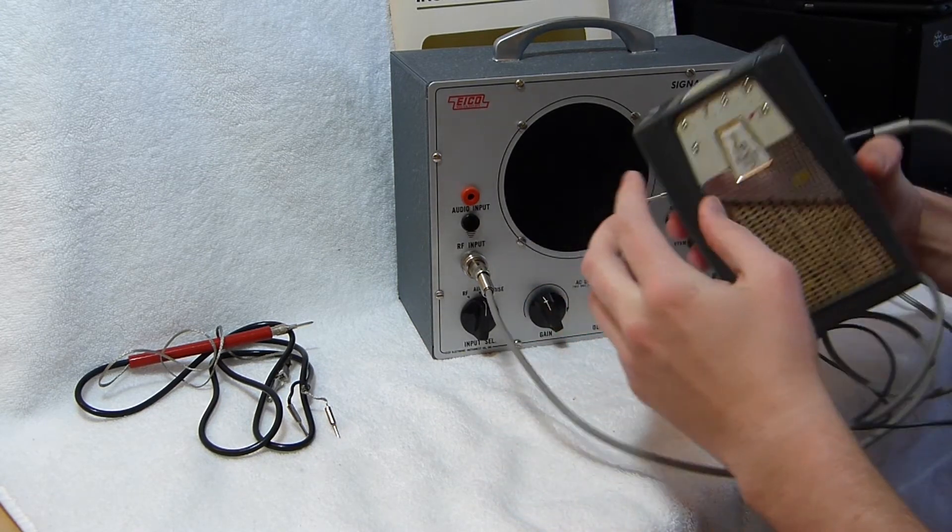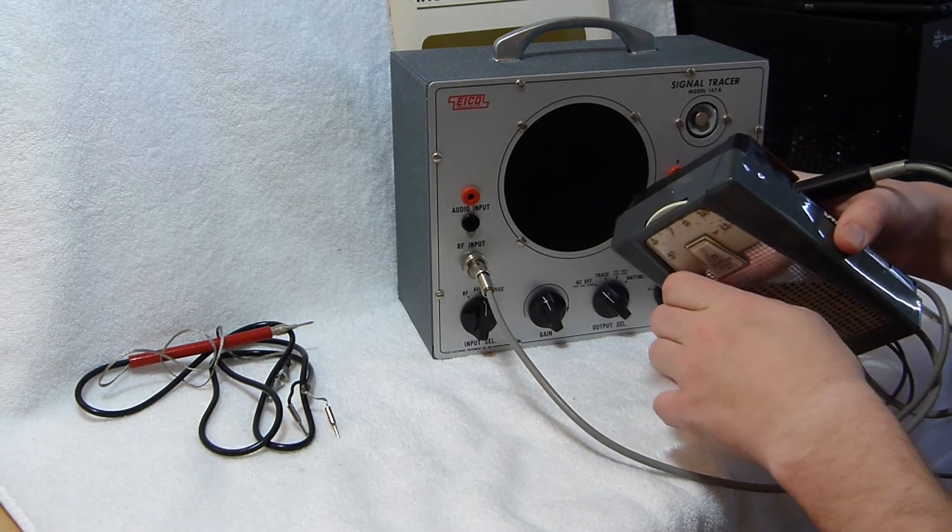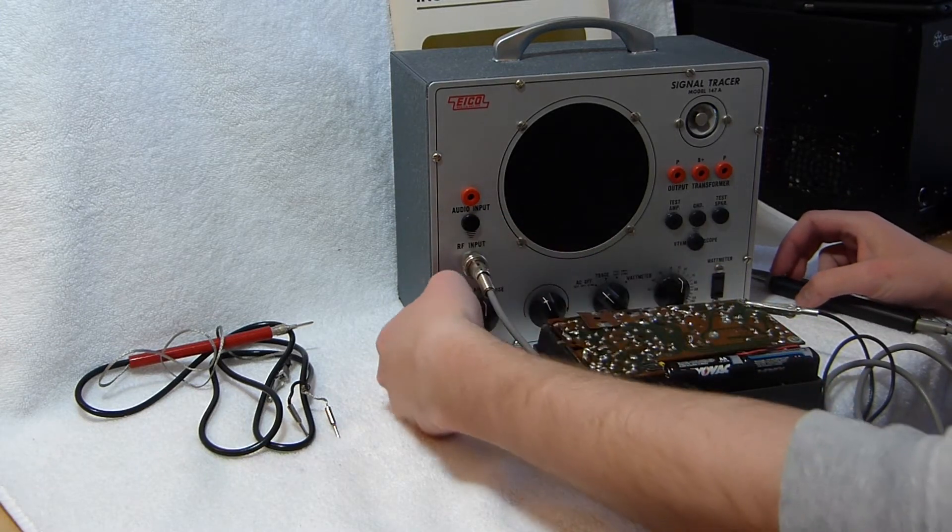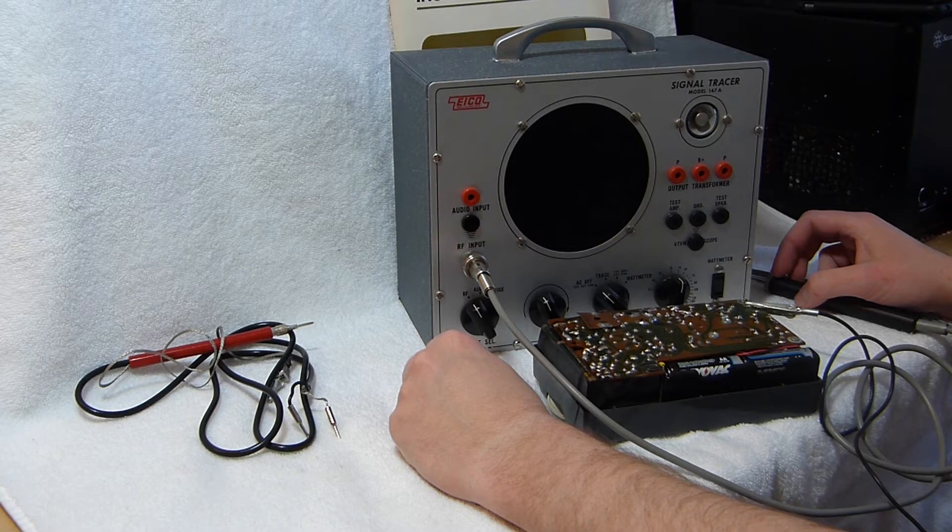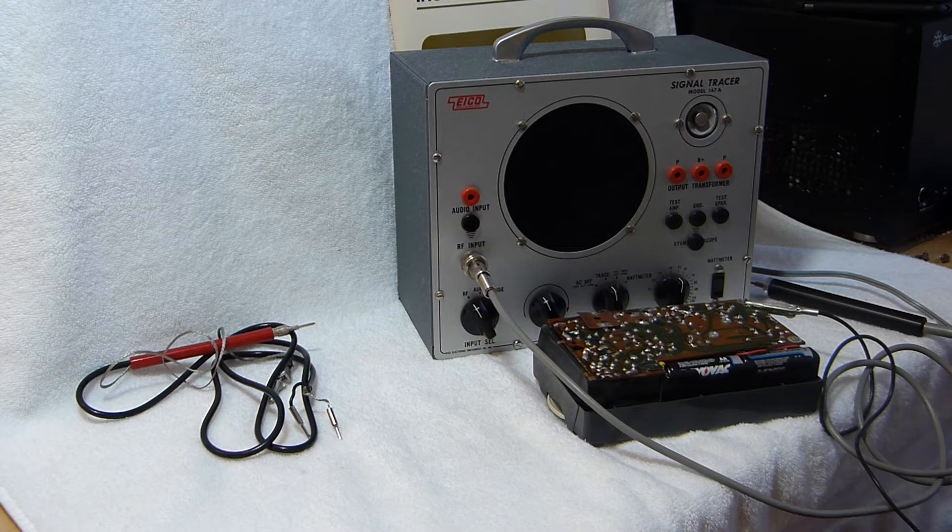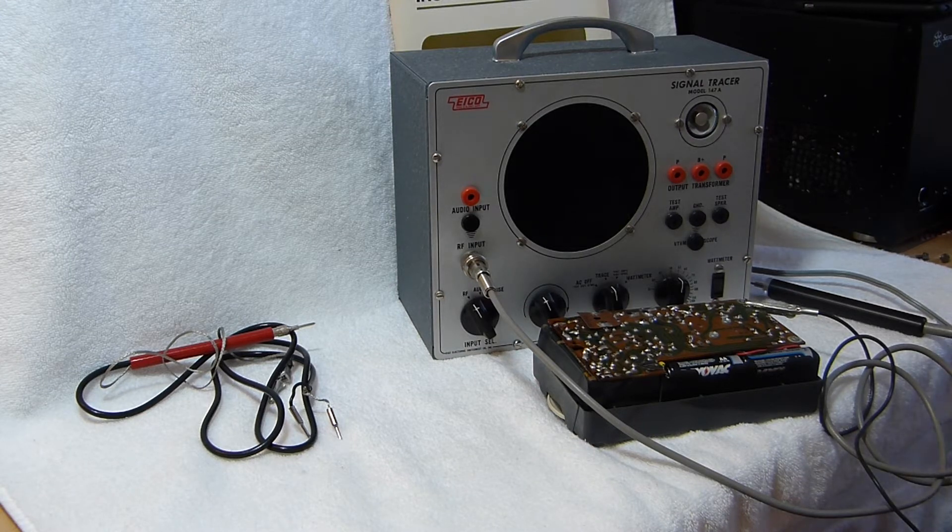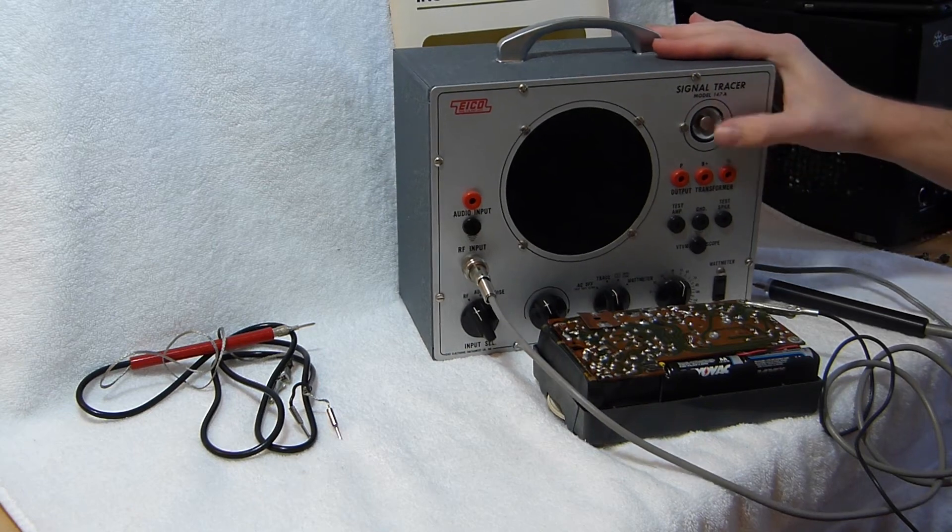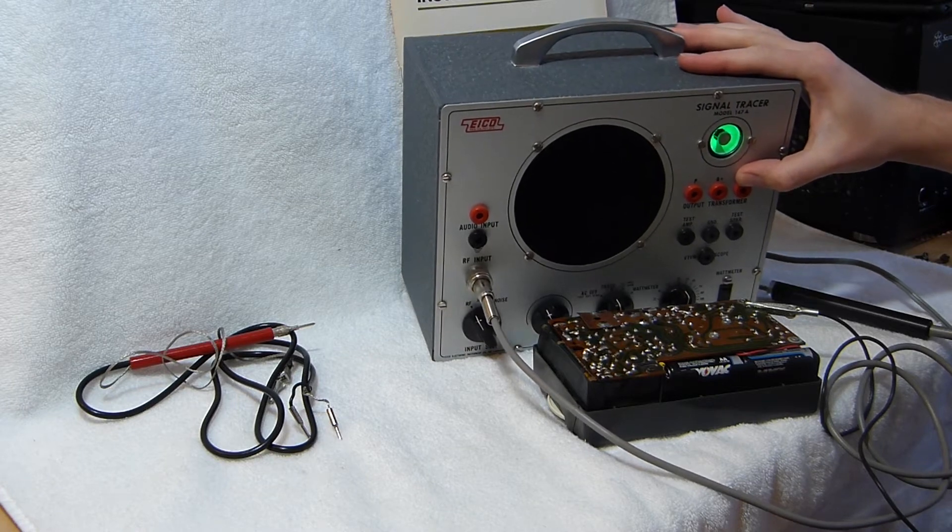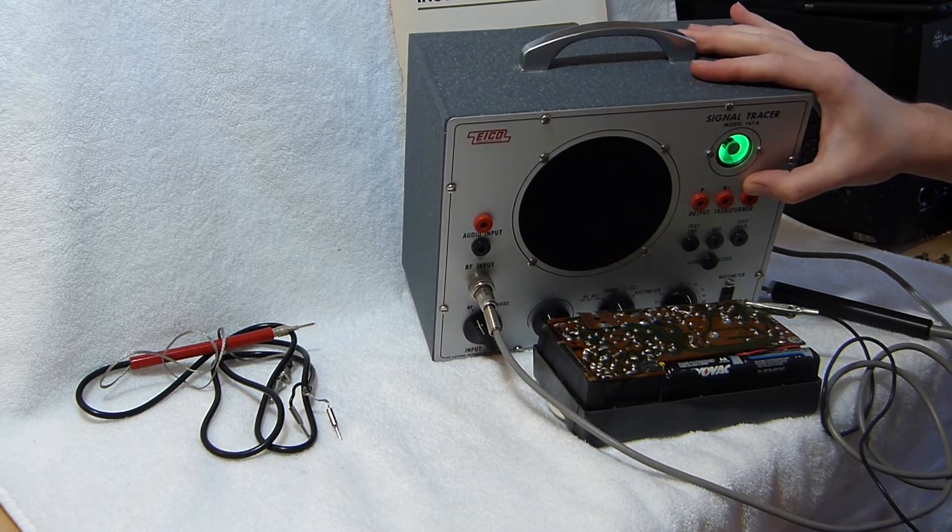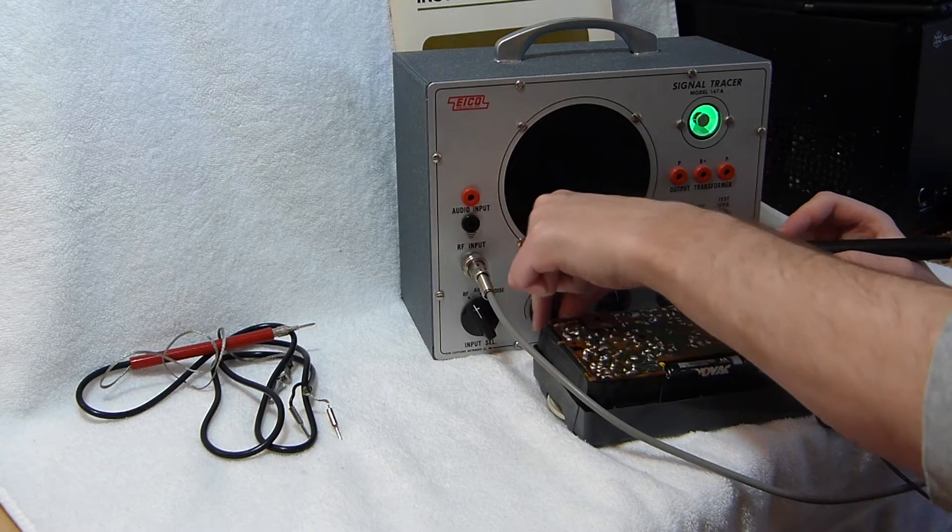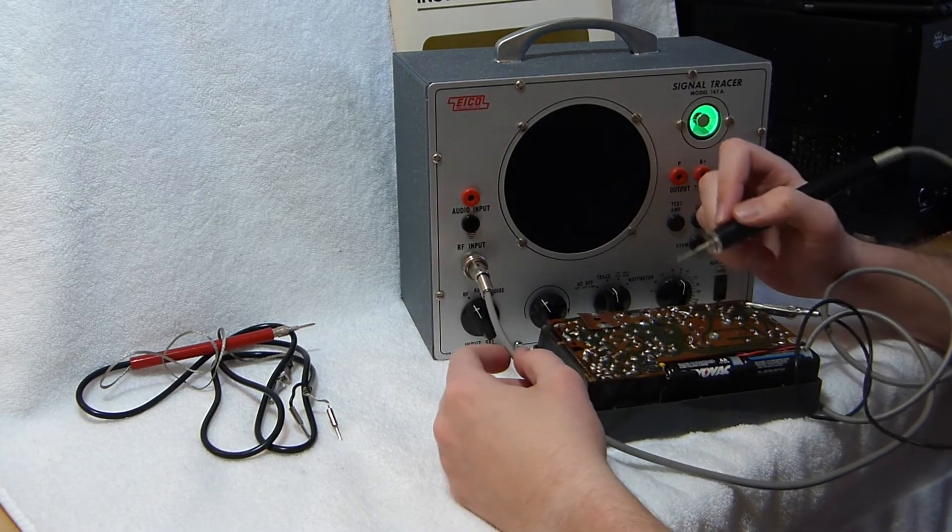So I've got an Emerson 888 here. Just to demonstrate this thing on. Switch that over to audio, or rather RF. It was on audio. Set it to trace and wait for the tubes to warm up. I can see that eye tube there glows like new. Nice and bright. This is the gain control for both the audio and RF tracer. Let's see if I can get something here.